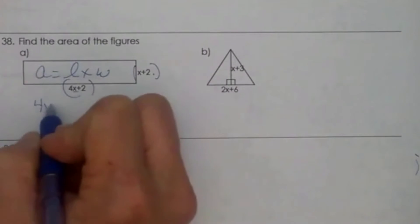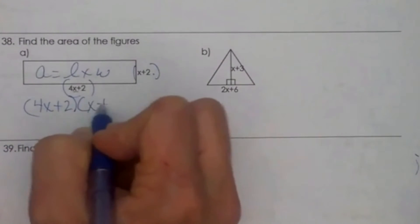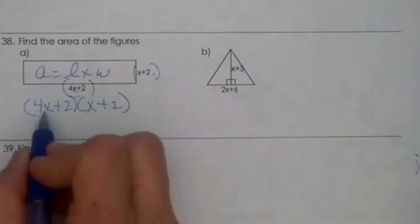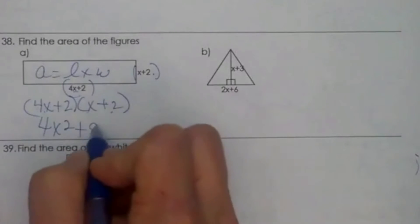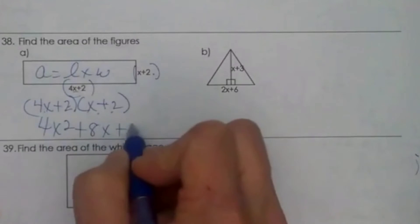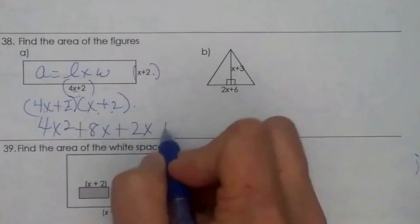I have 4x plus 2 times x plus 2. Let's FOIL. First, 4x squared. Outer, positive 8x. Inner, positive 2x. And last, positive 4.